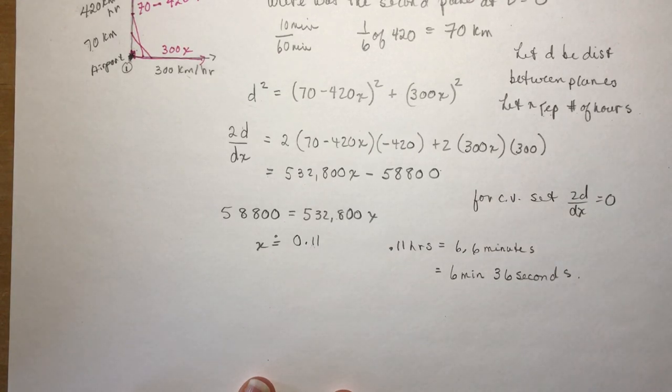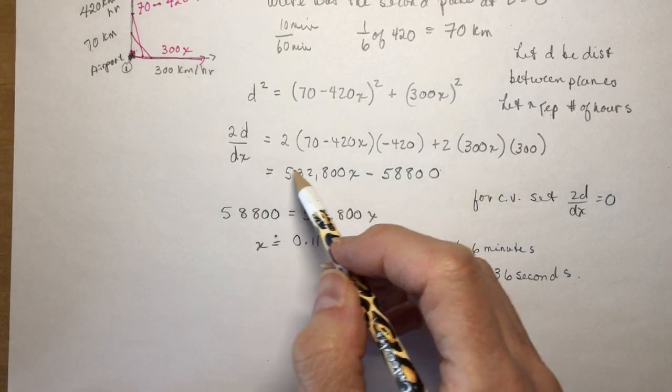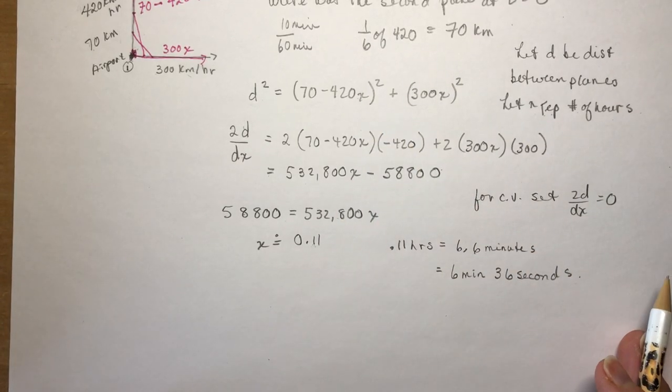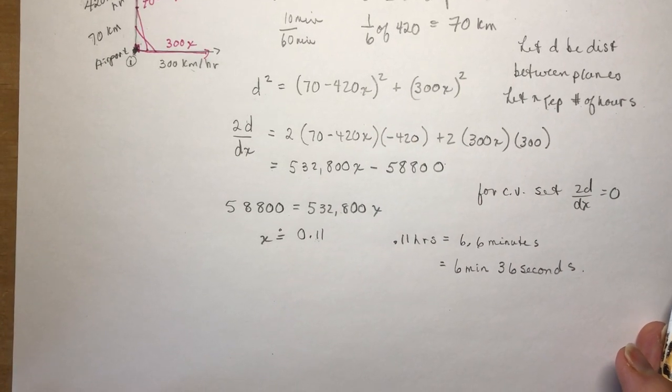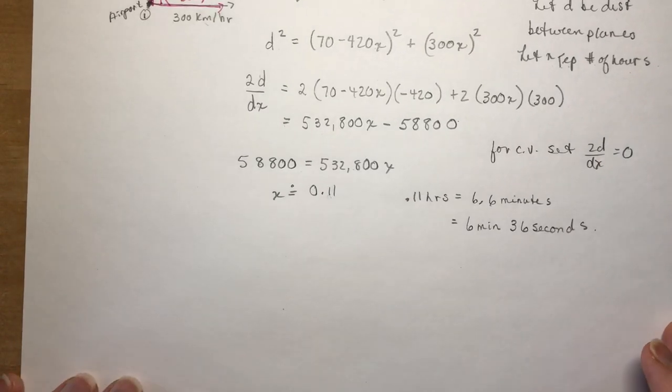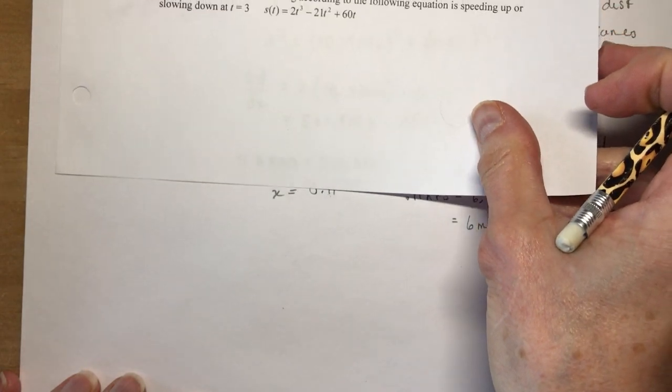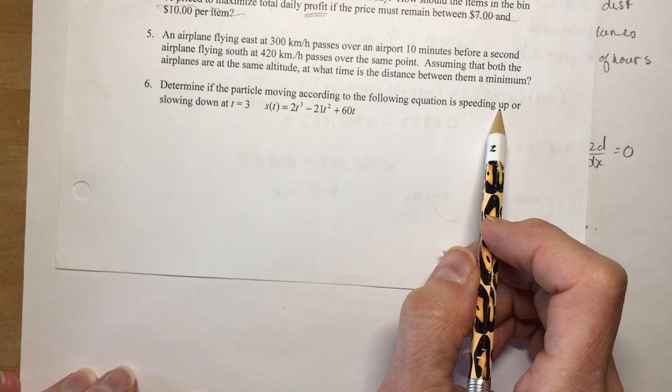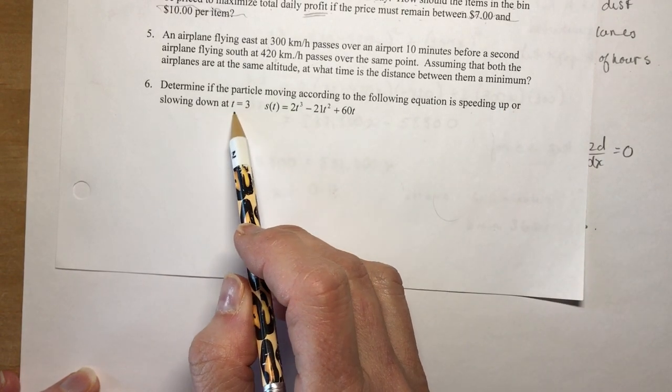Okay so that's the first part of your solution because it says at what time is the distance between them a minimum. Oh no, I thought maybe it asked you what the distance was. So if you had to find the distance you could substitute this back into the original equation, your x at 0.11, okay? So that would give you the closest if that was something that was asked. Okay, the second question, I think I might even have room to put it on the bottom of this page. It says determine if the particle moving according to the following equation is speeding up or slowing down at t equals 3.